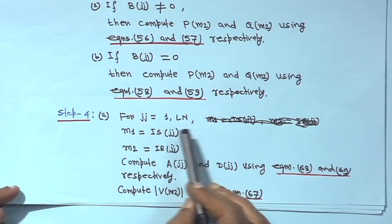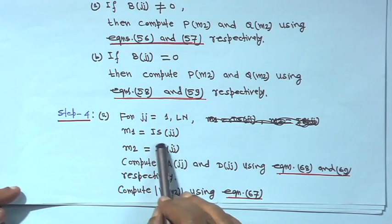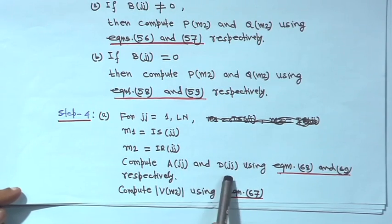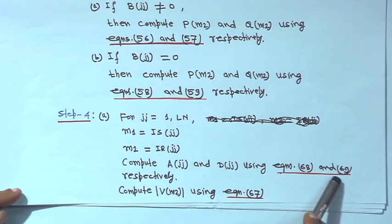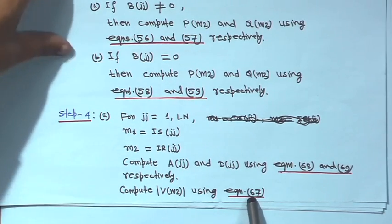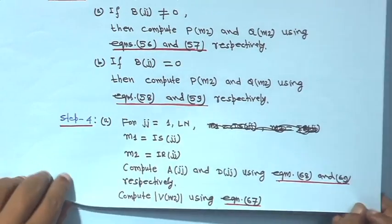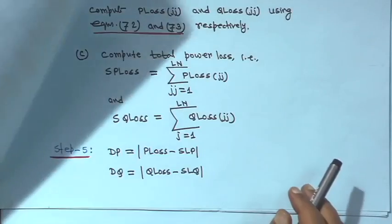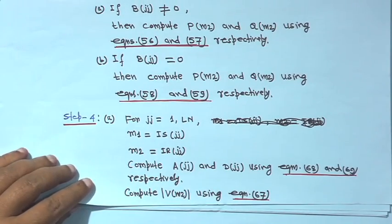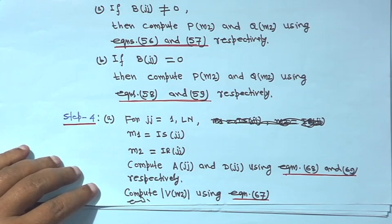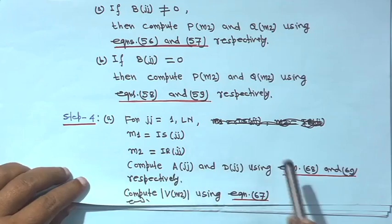Step 4, part A: for jj equals 1 to LN, set m1 equal to isjj and m2 equal to irjj. Compute a jj and d jj using equations 68 and 69 respectively. Then compute voltage magnitude VM2 using equation 67 — first this expression is given, then the other two. Close this loop.